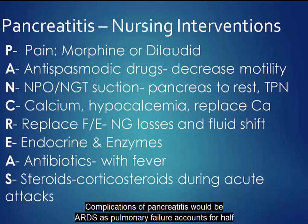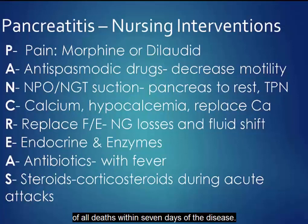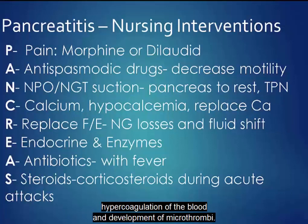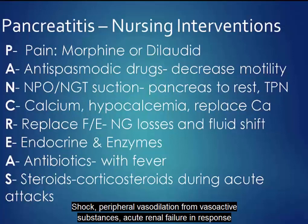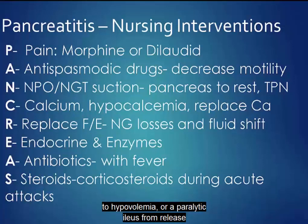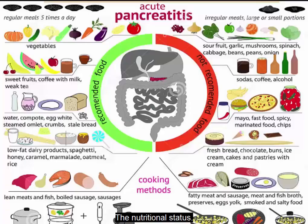Complications of pancreatitis would be ARDS, as pulmonary failure accounts for half of all deaths within 7 days of the disease. DIC — disseminated intravascular coagulation — hypercoagulation of the blood and development of microthrombi. Shock from peripheral vasodilation from vasoactive substances. Acute renal failure in response to hypovolemia. Or a paralytic ileus from release of the pancreatic enzymes into the abdominal cavity.